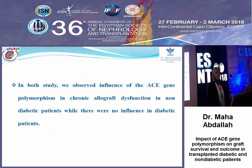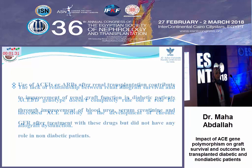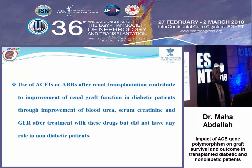In this study we observed an influence of ACE genotype polymorphism on chronic allograft dysfunction in non-diabetic patients, while there was no such influence in diabetic patients. The lack of relationship between renal graft survival and ACE I/D polymorphism does not completely rule out a role of increased ACE activity in the development of chronic allograft dysfunction. Use of ACE inhibitors or ARBs after renal transplantation contributes to improvement of renal graft function in diabetic patients through improvement of blood urea, creatinine, and GFR after treatment, but did not have any role in non-diabetic patients.